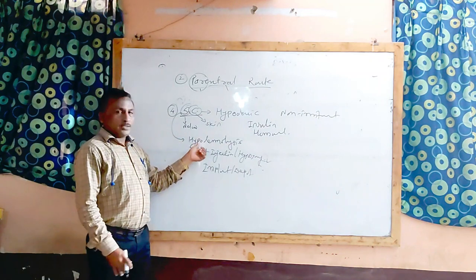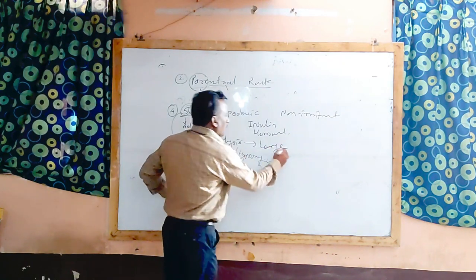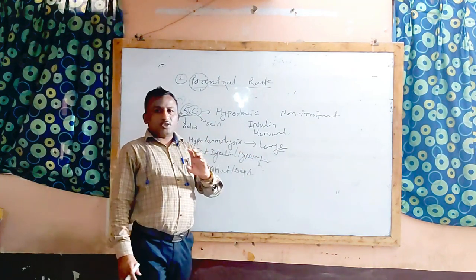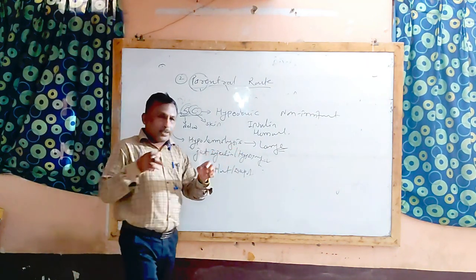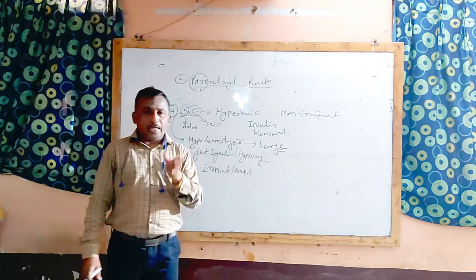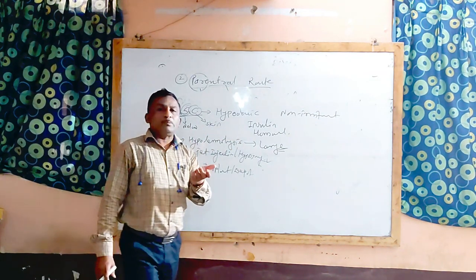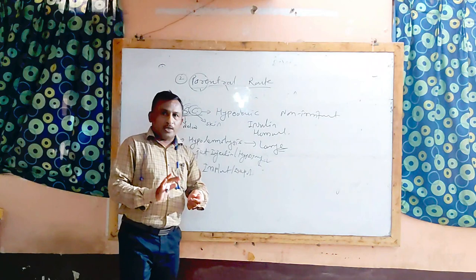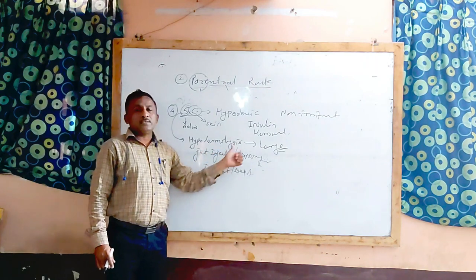Hypodermoclysis is a special process of injecting non-irritant drugs below the skin. This process is used particularly in children during vaccination or mass immunization programs. In this process, the drug is directly injected in large quantity at the site of the thigh or the deltoid. In children or elderly people where it is difficult to find a vein for puncturing, this route of administration is preferred — that is called the hypodermoclysis process.